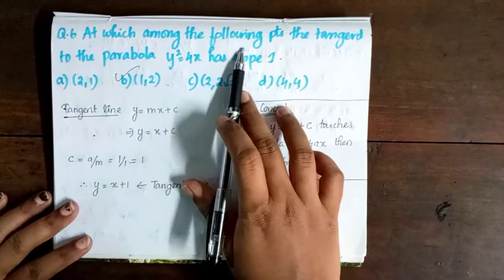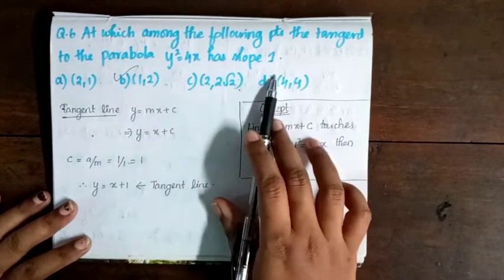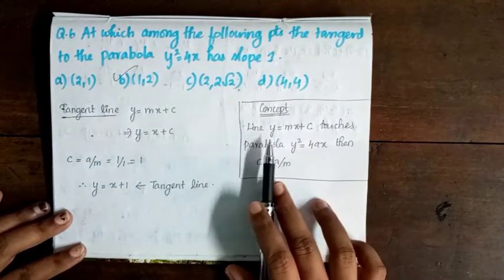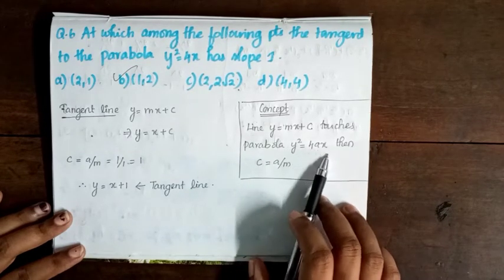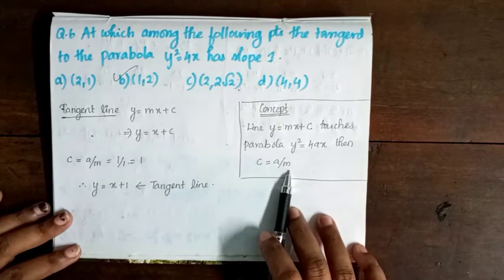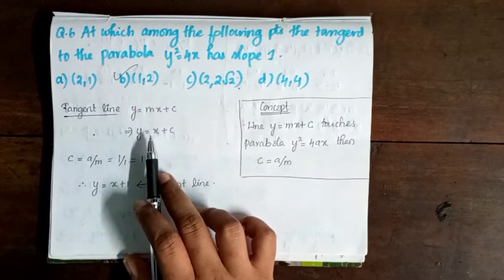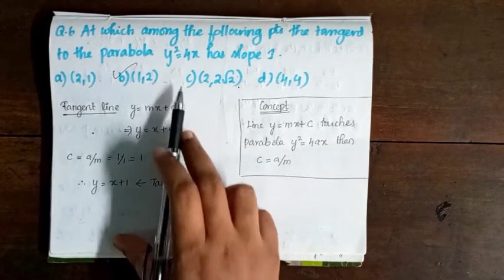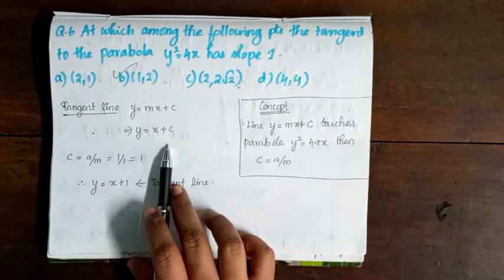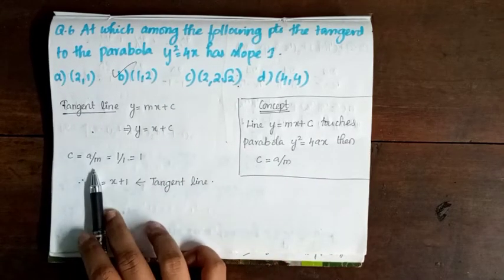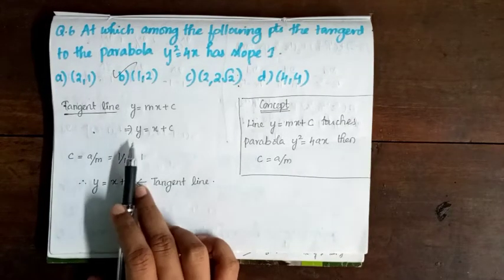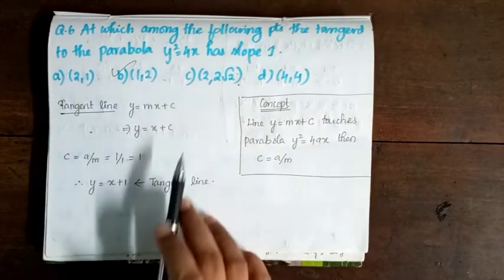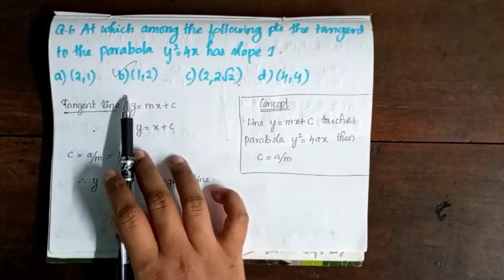Question 6: At which point does the tangent to the parabola y² = 4x have slope 1? A line y = mx + c touches the parabola y² = 4x when c = a/m. With slope m = 1, we substitute y = x + c. Using the condition c = a/m, c = 1. Therefore the tangent line is y = x + 1. Checking the options, option B is correct.